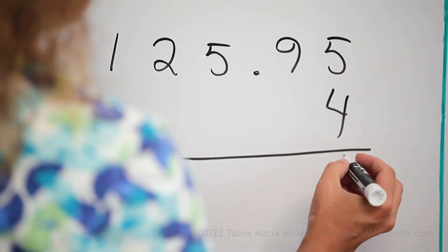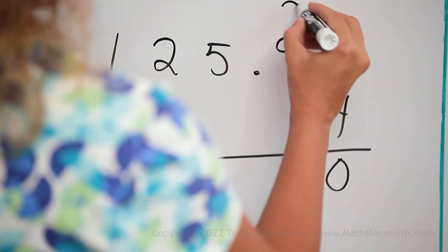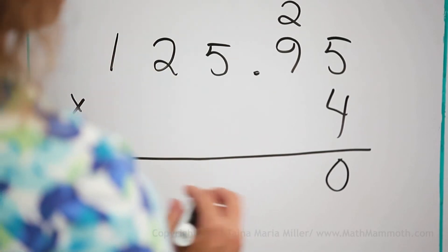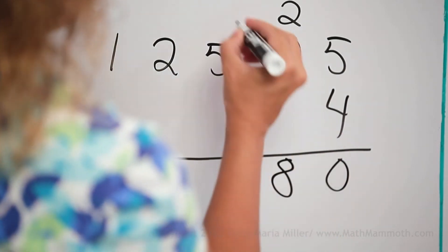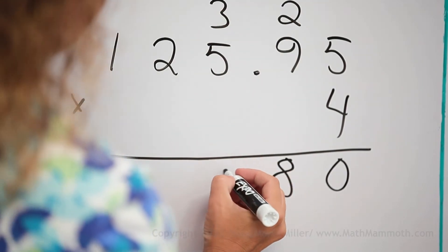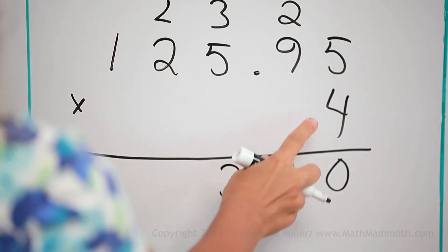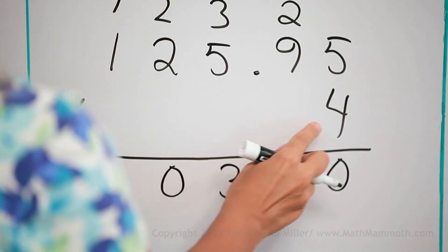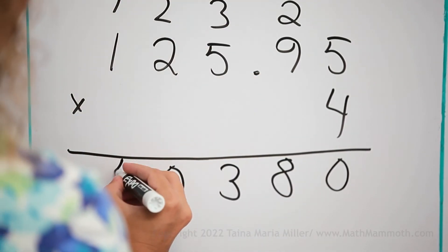Four times five, 20. Four times nine is 36, plus two, 38. Four times five is 20, plus three, 23. Four times two is eight, plus two is 10. And then four plus one is five.